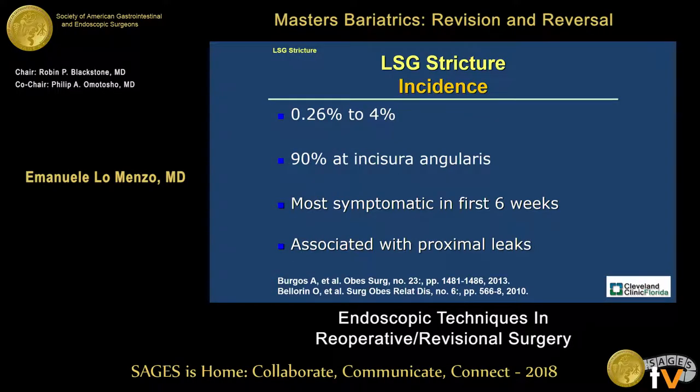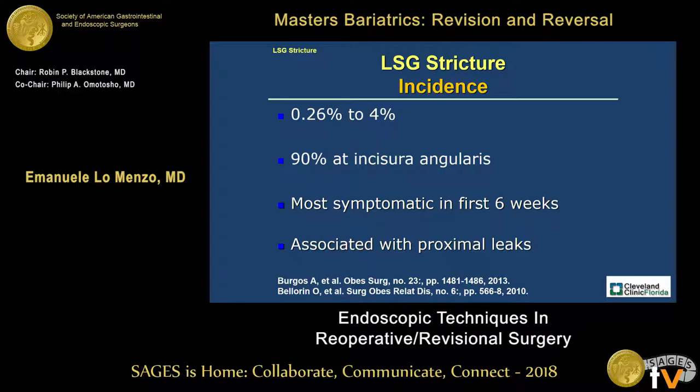A few words on strictures. We all know about the incidence. The issues are at the incisura angularis. Proximal leaks can result as a consequence. The main problem for some cases is the axial rotation, which is really the Achilles heel of sleeve gastrectomy and also the treatment of these strictures.